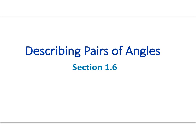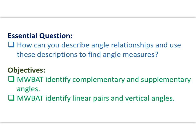Welcome back, mathematicians. Let's take care of the last section of unit one, describing pairs of angles, section 1.6. Our essential question: how can you describe angle relationships and use these descriptions to find angle measures? Our objectives are that mathematicians will be able to identify complementary and supplementary angles, in addition to identifying linear pairs and vertical angles.